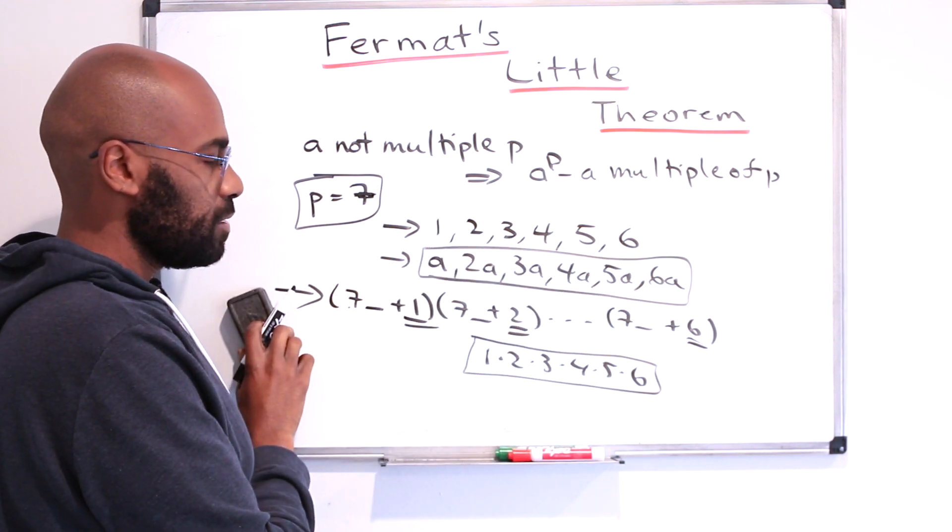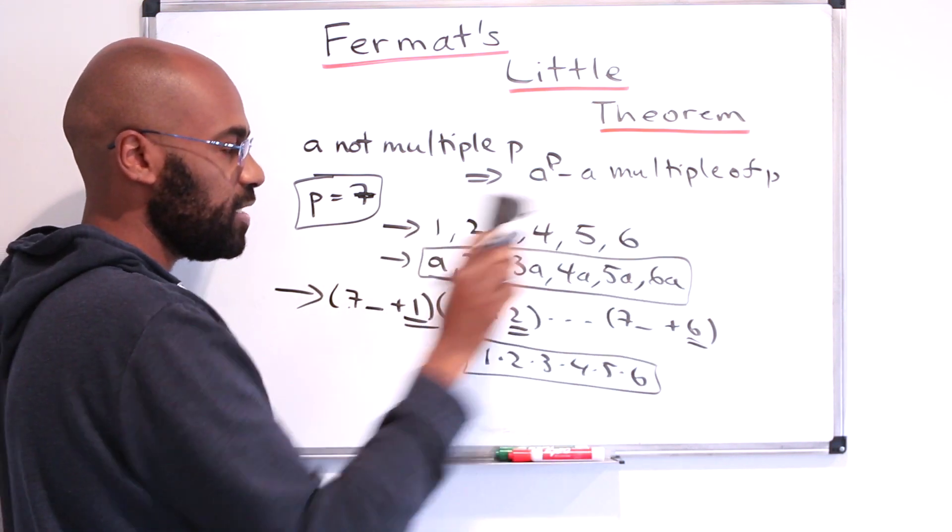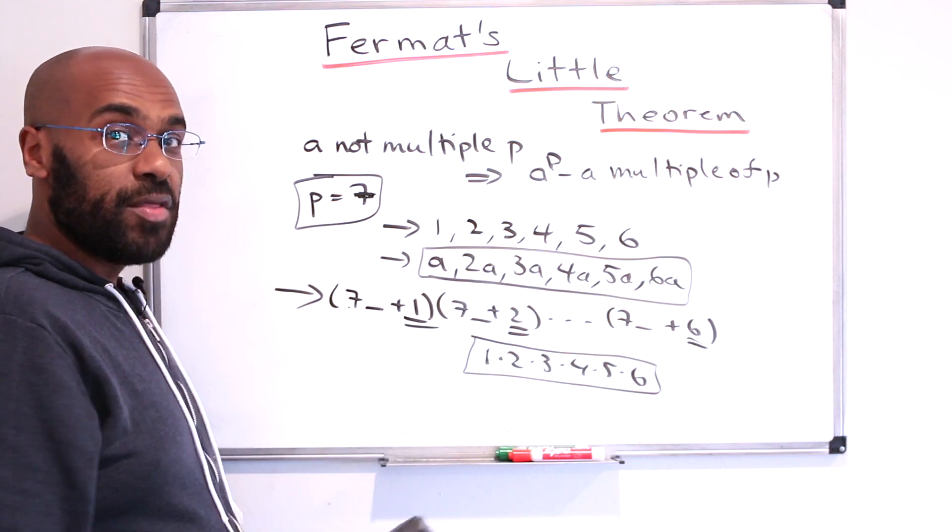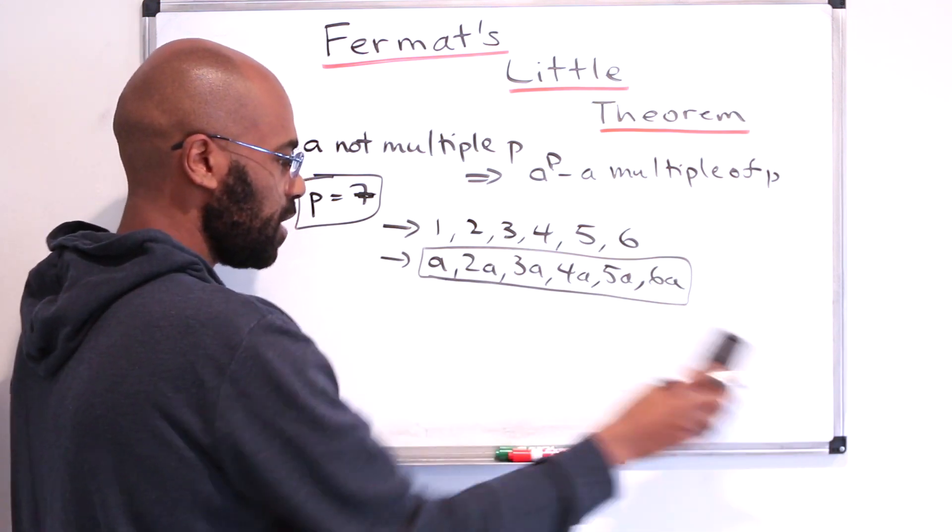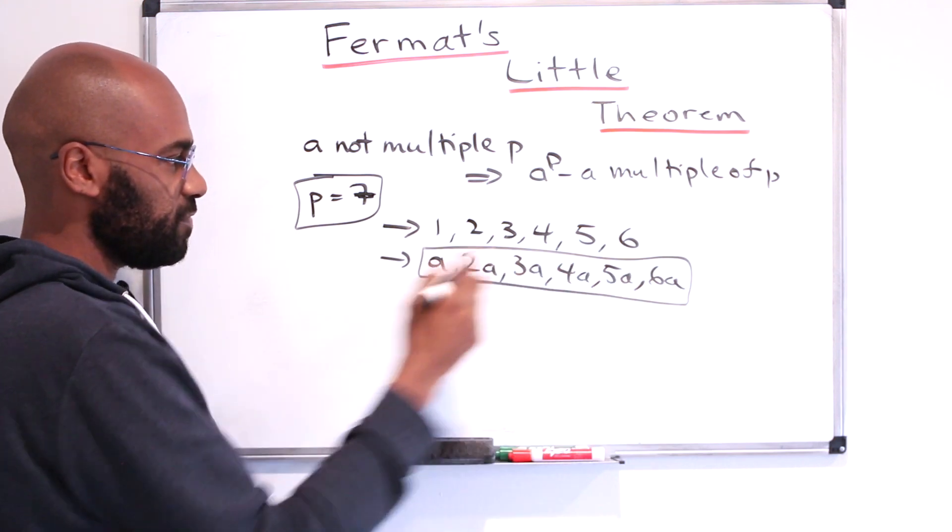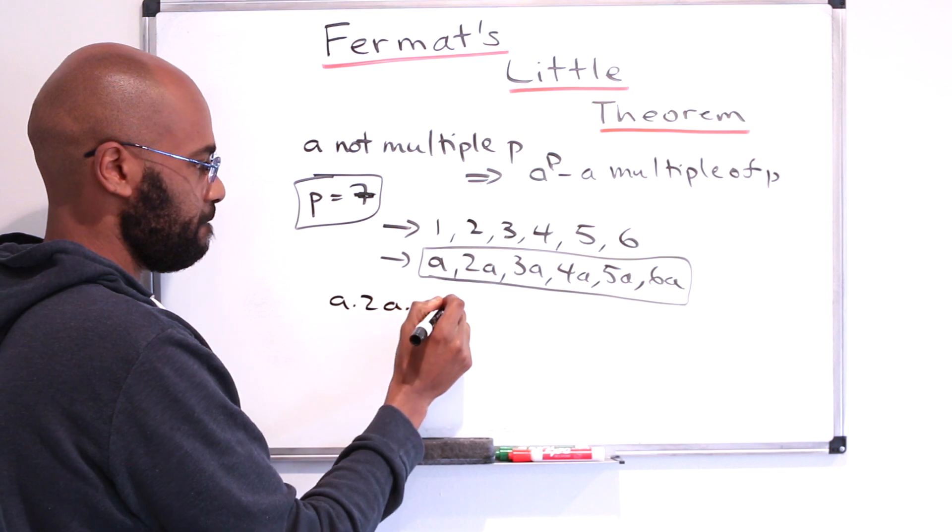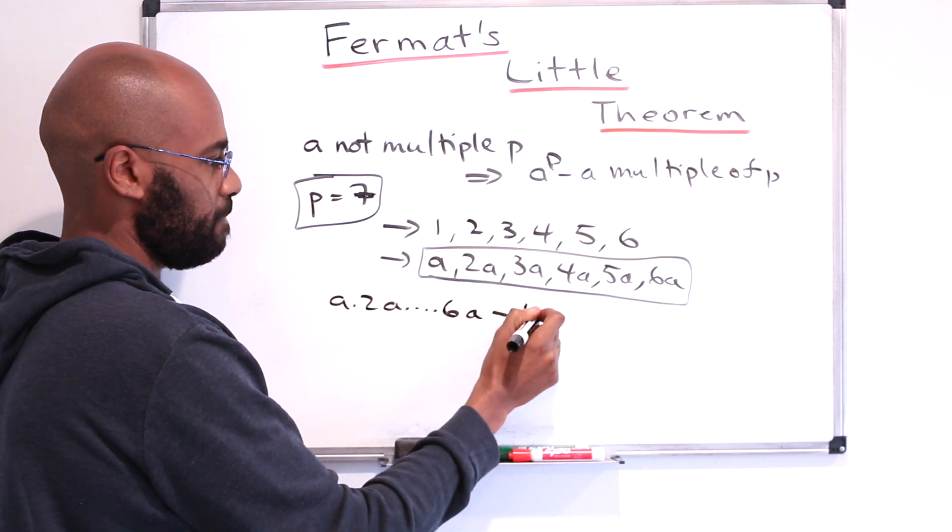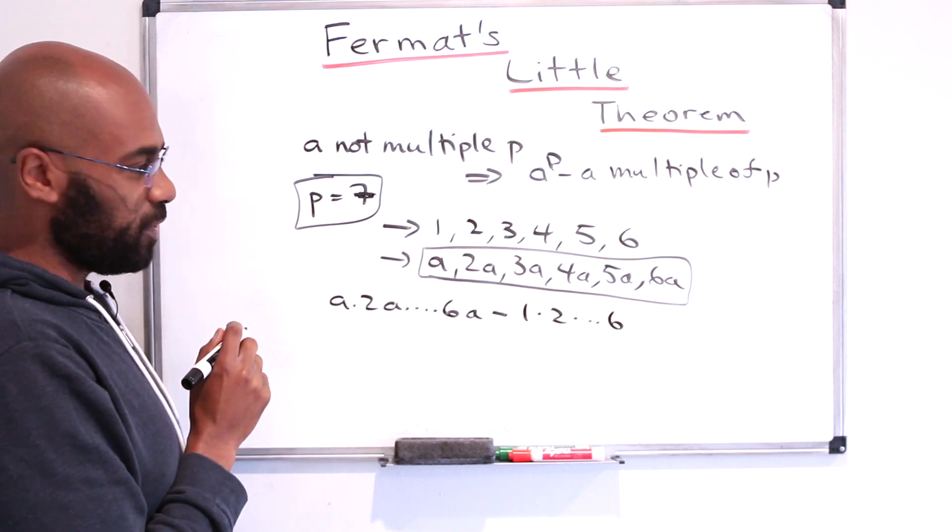If the product of these things leaves the same remainder when you divide by 7 as the product of these things, that means that their difference is divisible by 7. So the difference of these two things is a multiple of 7 itself.